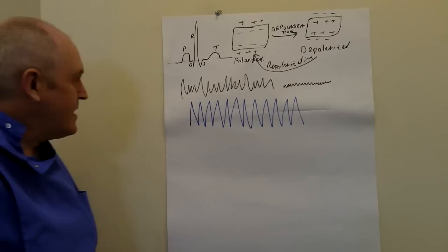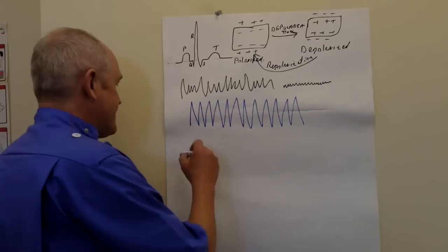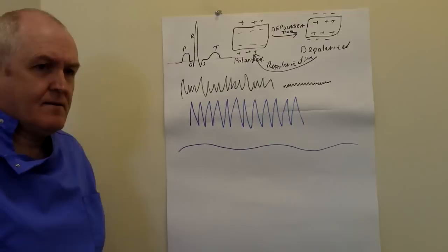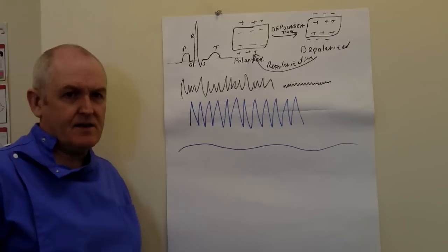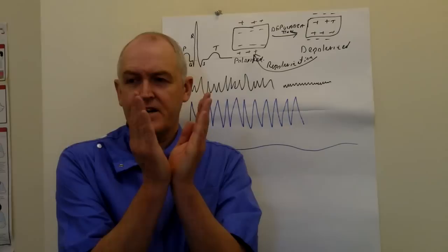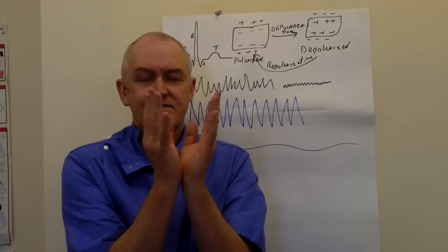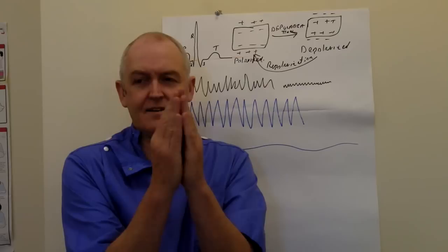Another cause of cardiac arrest is asystole. 'A' means without, 'systole' means cardiac contraction. So this is a normal sinus rhythm, this is coarse ventricular fibrillation, this is fine ventricular fibrillation, this is ventricular tachycardia, and this is asystole.